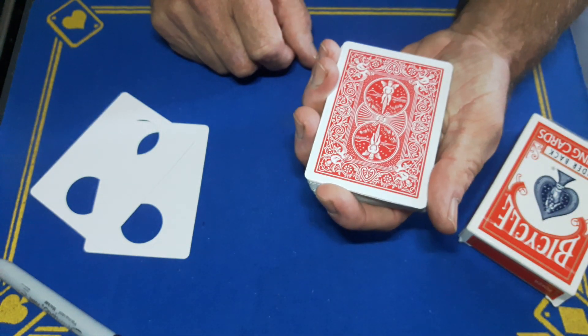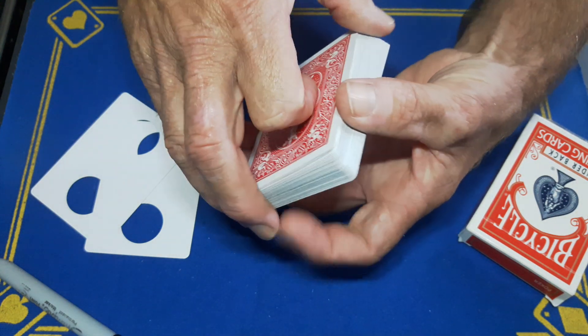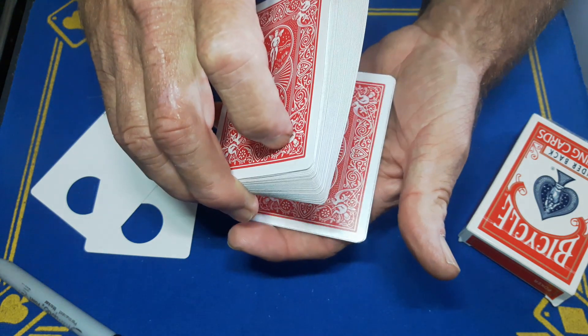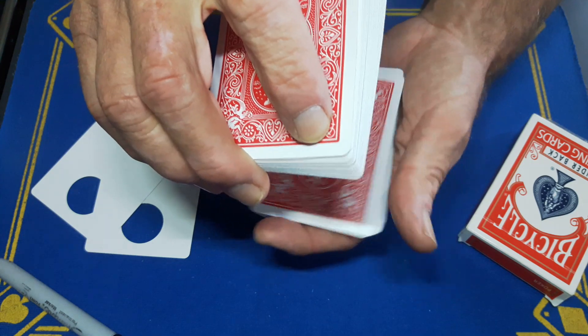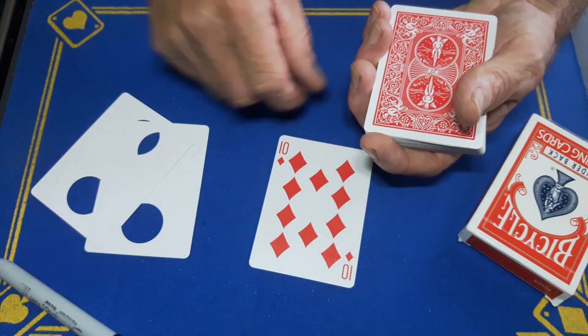Right, spectator's got a free choice of any card, but because you've got these two blanks on the top, the easiest way is to dribble the cards because you can drop a few cards first to cover the bottom card and then dribble till they call out stop.